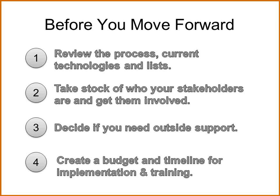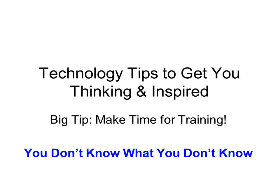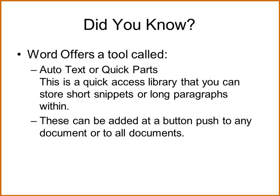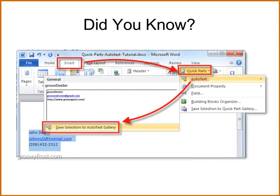Now let's talk about some technology tips to get you thinking and inspired. My first big tip: you don't know what you don't know. Sometimes the biggest thing is to make time for training. Next tip: did you know that Word offers a tool called Auto Text in older versions, or in Office 2007 and 2010 it's called Quick Parts? This is a very neat tool that allows you to store large paragraphs, almost entire letters, or short snippets like taglines — things you really want to make sure you say properly. These can be added at the push of a button and accessed through one document or all documents in your library.